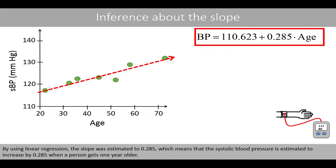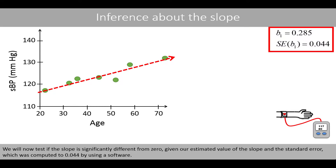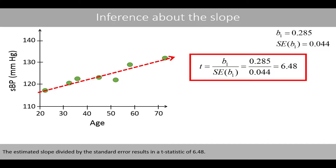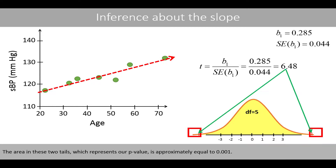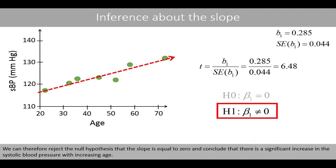By using linear regression, the slope was estimated to 0.285, which means that the systolic blood pressure is estimated to increase by 0.285 when a person gets one year older. We will now test if the slope is significantly different from 0, given our estimated value of the slope and the standard error, which was computed to 0.044 by using software. The estimated slope divided by the standard error results in a t-statistic of 6.48. Since we have seven data points and have estimated two parameters, we use a t-distribution with 7 minus 2 degrees of freedom. The area in these two tails, which represents our p-value, is approximately equal to 0.001. We can therefore reject the null hypothesis that the slope is equal to 0 and conclude that there is a significant increase in the systolic blood pressure with increasing age.